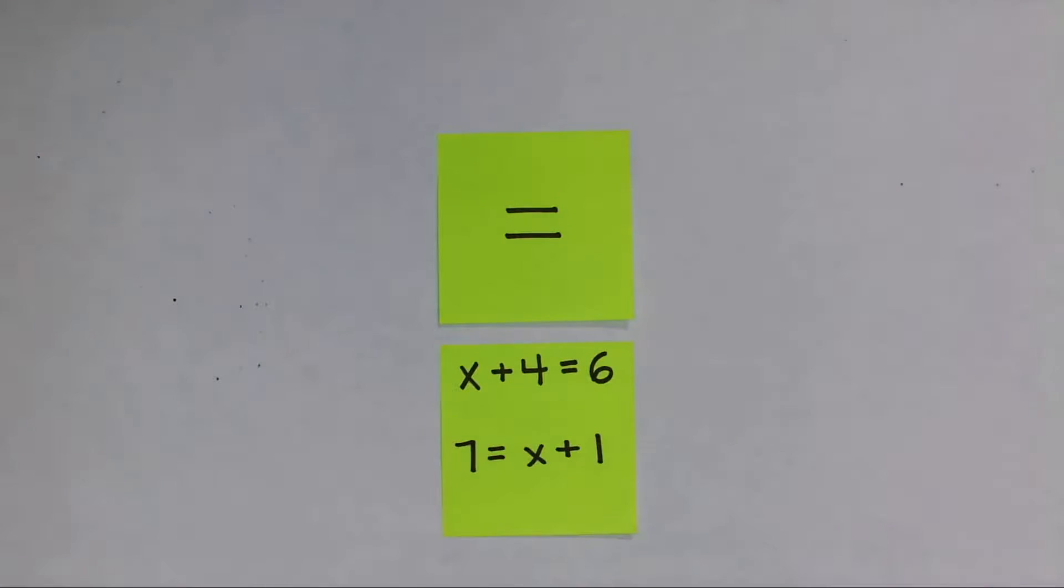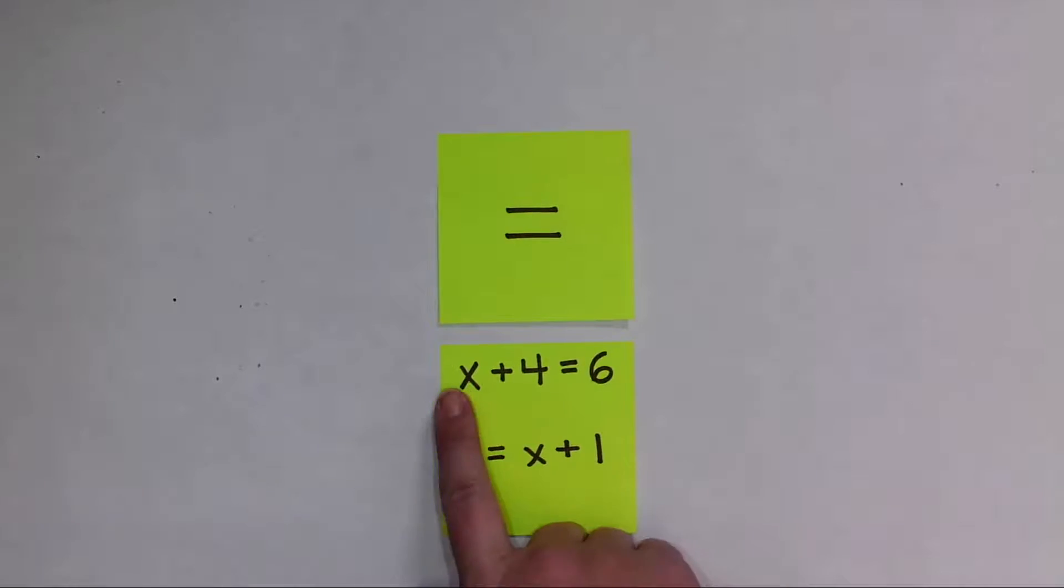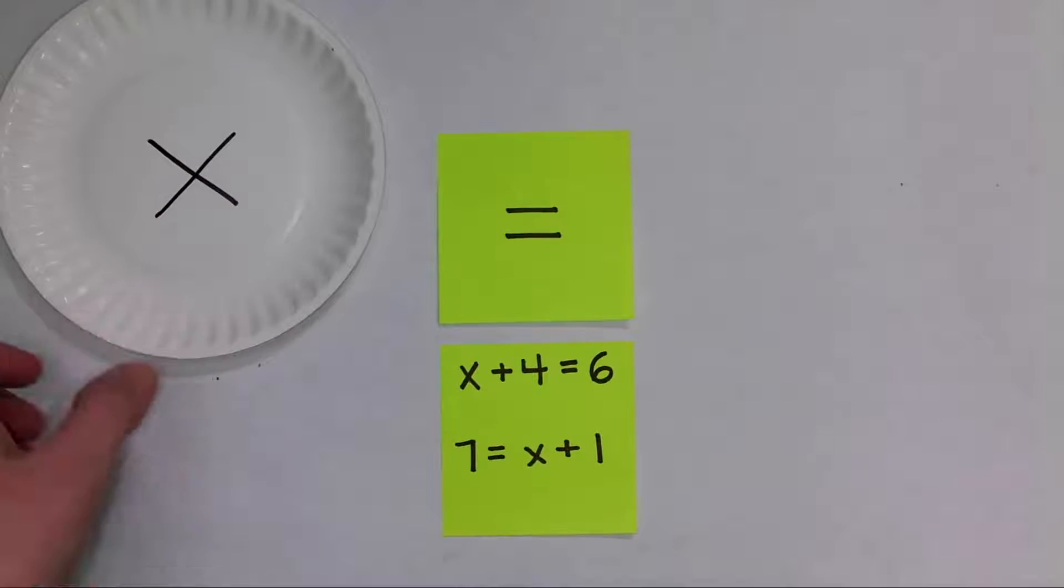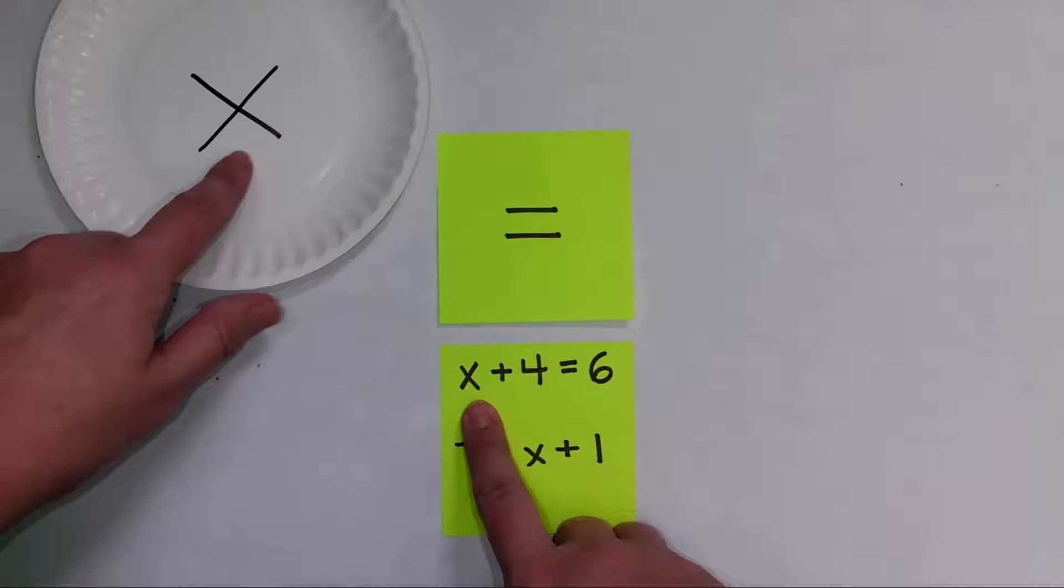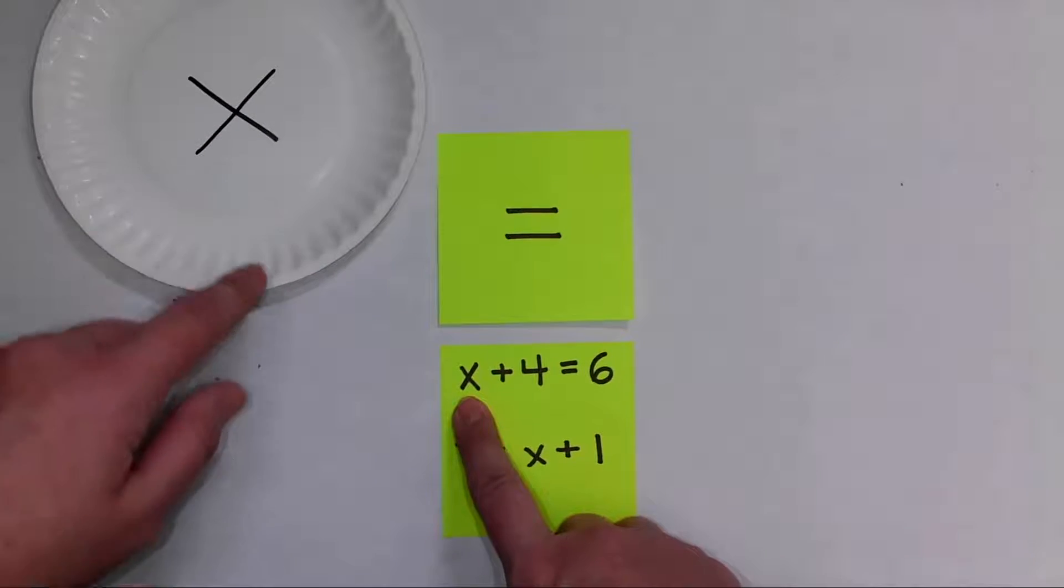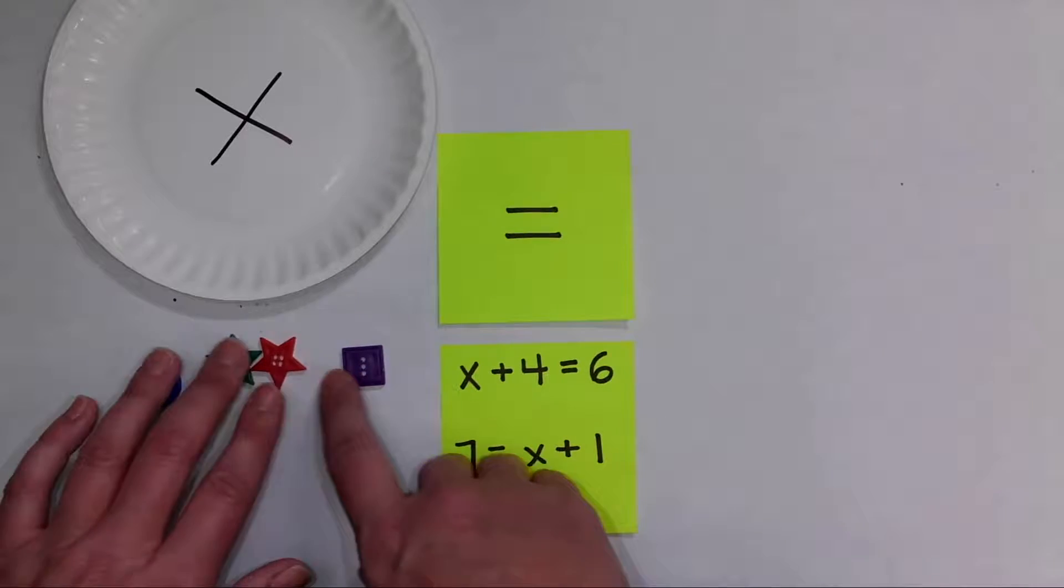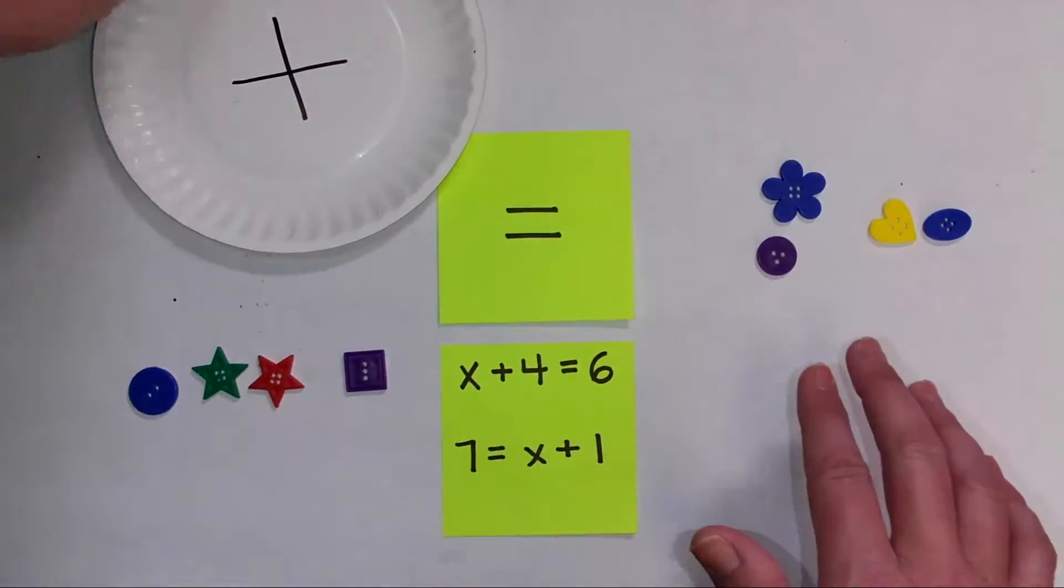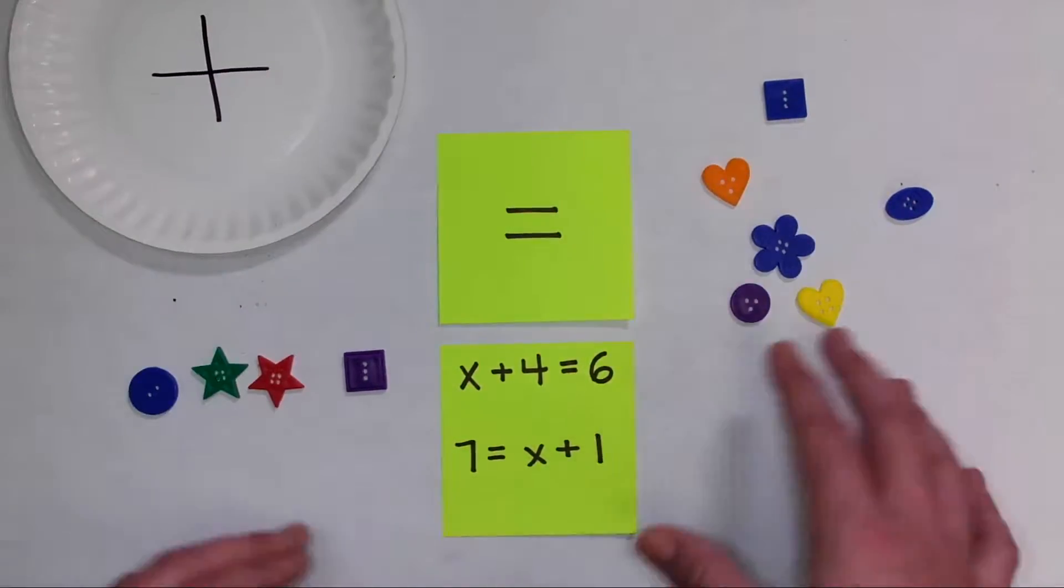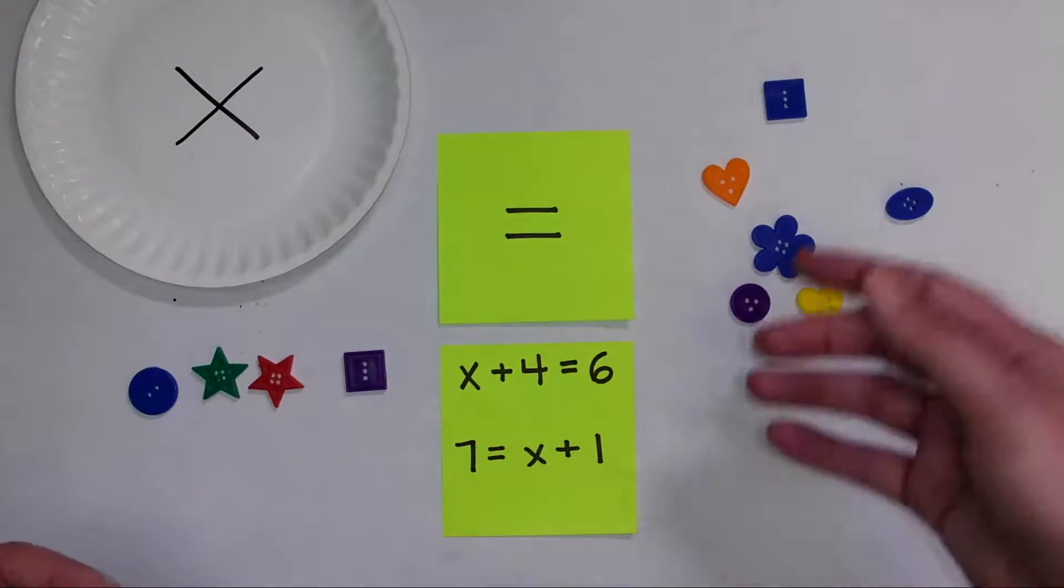We have our problems written here. I always like to have the abstract form of the problem written out for students. I'm going to set this up using what we could call cups and counters—I'm actually using plates today because they're easier and flatter to work with. I'll get out one plate with an x written on it. To that plate, I'm going to add four buttons. On the other side of the equal sign, we have six, so I'll bring six buttons over here. If you're walking around the classroom and students are setting this up, you can see they're solving x + 4 = 6.